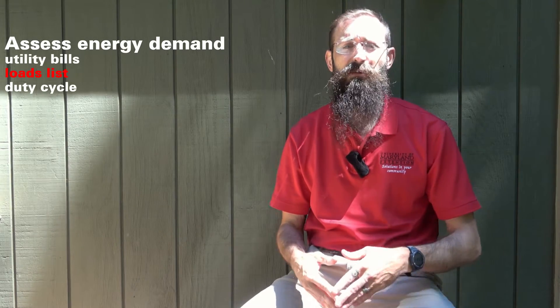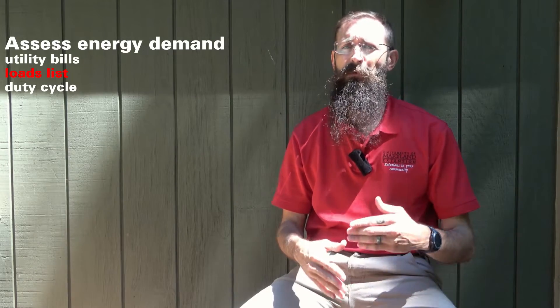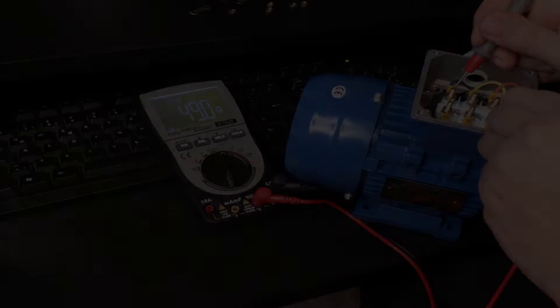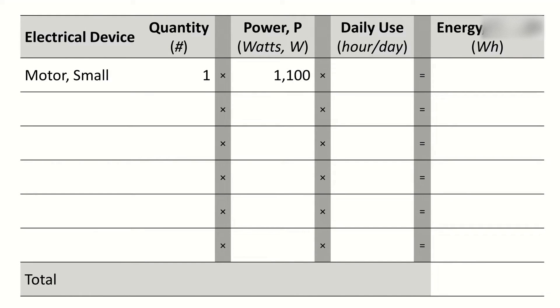For off-grid, mobile, or any battery-integrated system, an electrical loads list is a particularly useful strategy. We simply record the power rating of each device in watts as well as the number of hours we intend to operate the device. Methods for assessing power ratings include voltage and current measurements using a multimeter, referencing the manufacturer's data sheet or owner's manual, or using an electric power meter plugged into the circuit. For example, a small motor with a power rating of 1,100 watts used about 15 minutes or 0.25 hours per day yields a daily energy consumption of 275 watt hours.